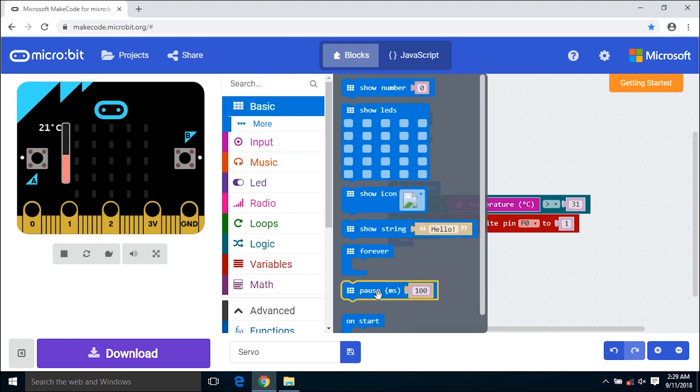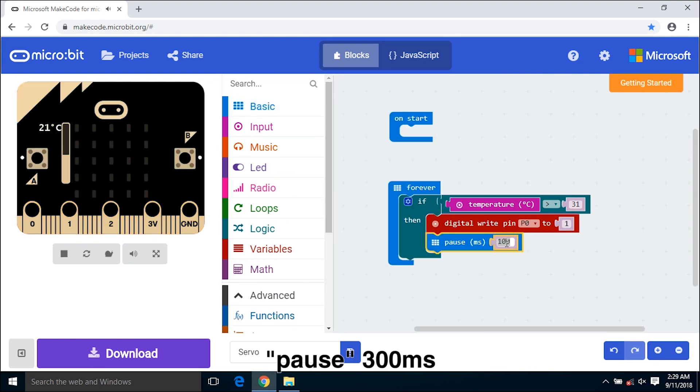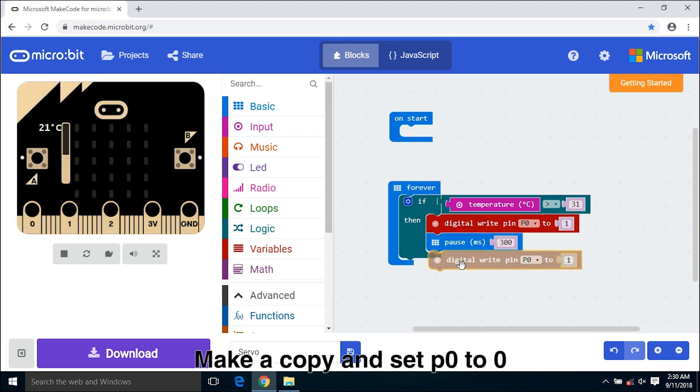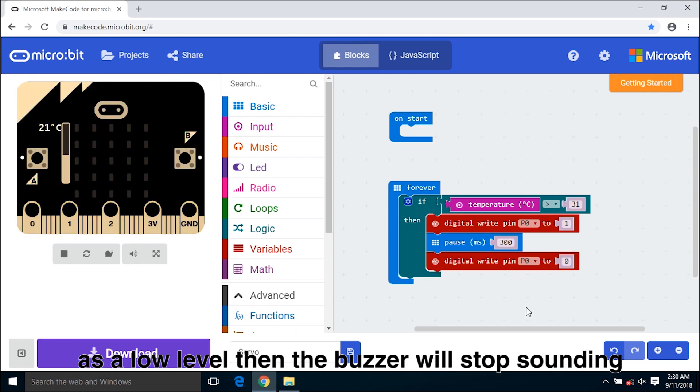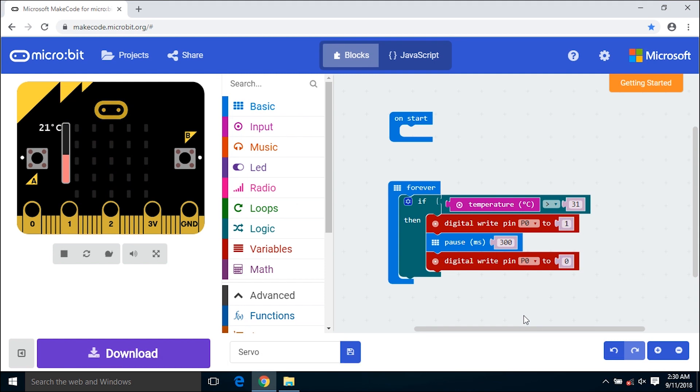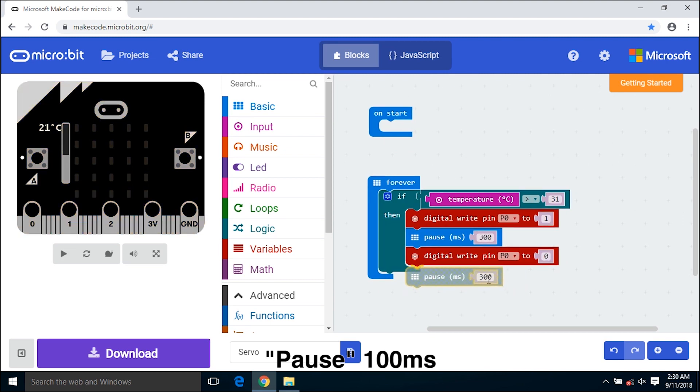Click basic, pause 300ms. Make a copy and set P0 to 0 as a low level, then the buzzer will stop sounding. And pause 100ms.